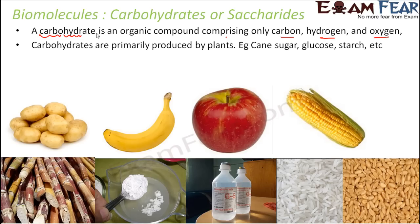Carbohydrates are primarily produced by plants. For example, cane sugar, glucose, starch, and cellulose are all examples of carbohydrates.